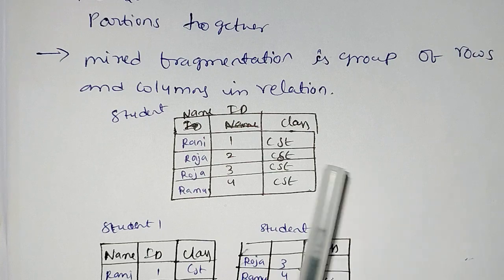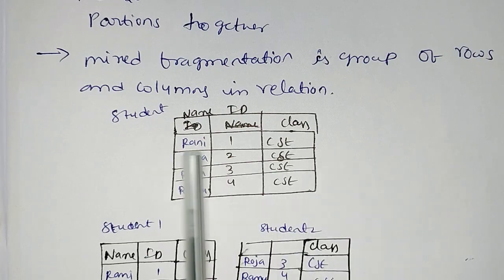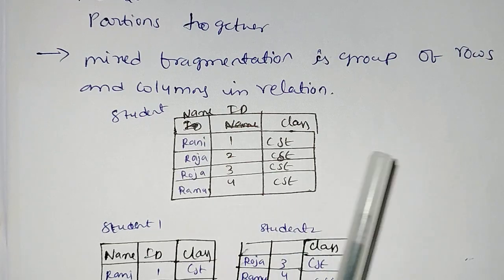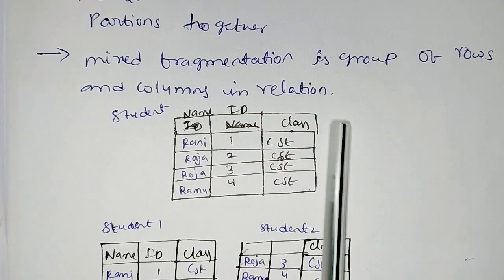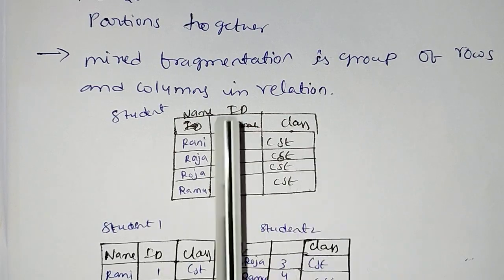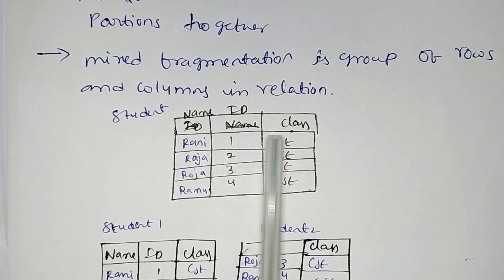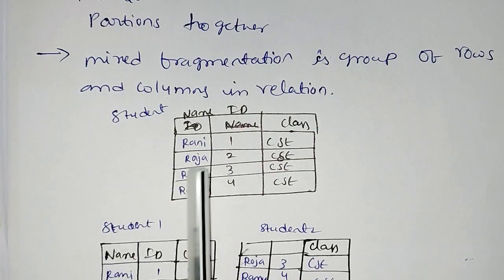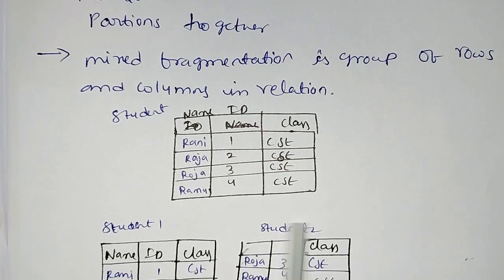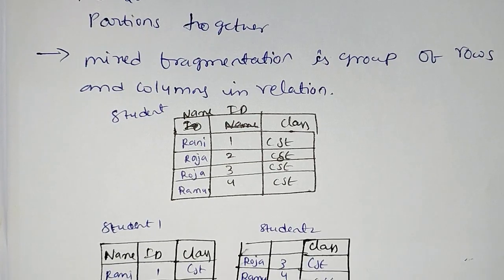This is the student table. The student table is separated by both rows and columns — it is one table with rows and columns combined.